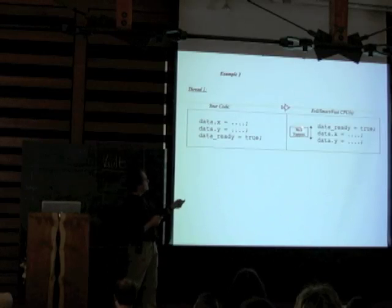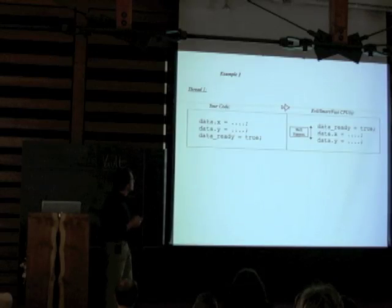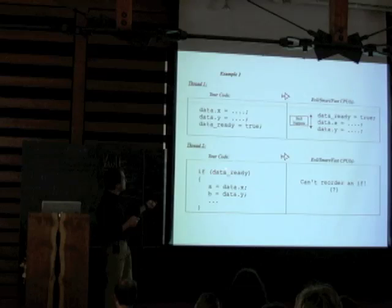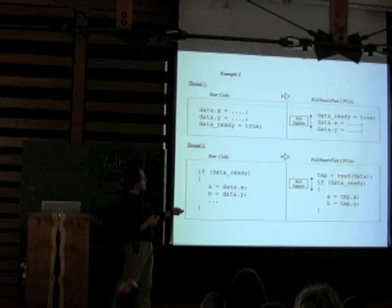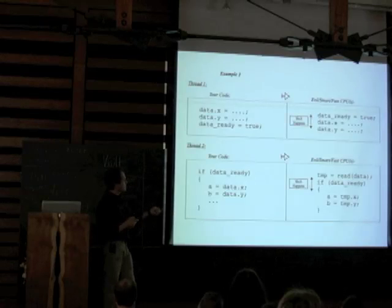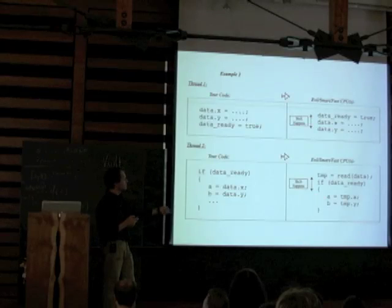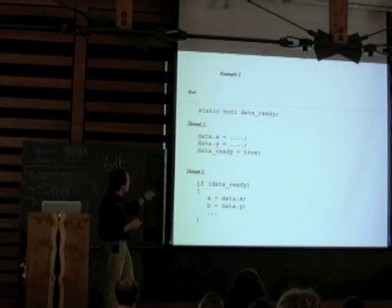So 'shift happens' — your memory things get shifted around on you. For the reading side of the code, even though you can't read the data before checking if it's ready, the CPU will gladly do that for you by reading the data into a temporary, then checking if it's ready, then using the temporary. This is because the CPU wants to look ahead and do things like speculative execution — start reading things ahead of time in case it needs them.